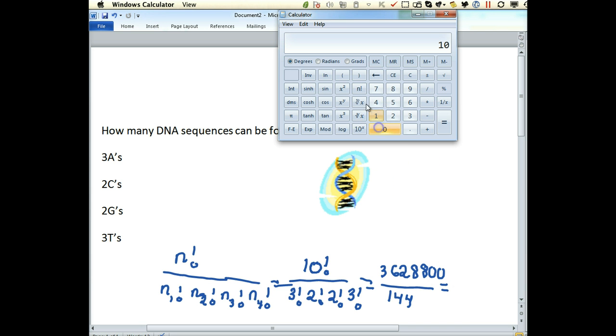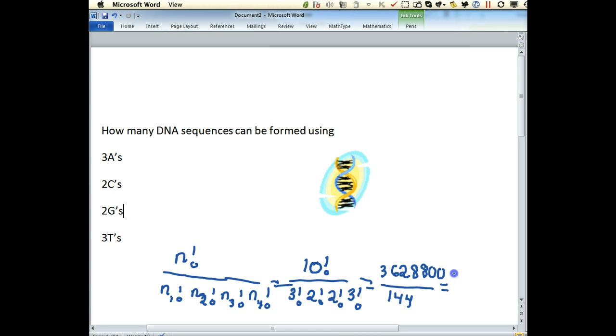So let's do that one more time, because I erased the number. Ten factorial divided by 144 was 25,200 different strands of DNA.